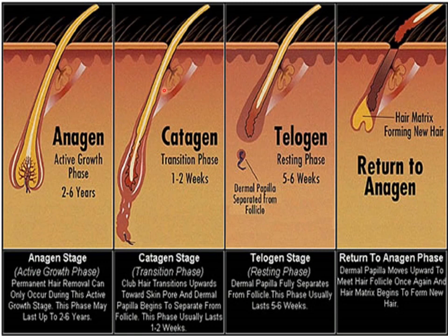The significance of this is that the anagen phase mainly determines the length of the hair. Many girls have very long hair because their anagen phase will be six to seven years, whereas some people — even if they don't get a haircut — their hair won't attain that much length. That is because the anagen phase will be very short in them.